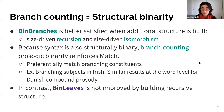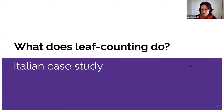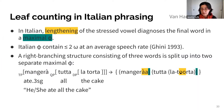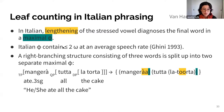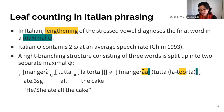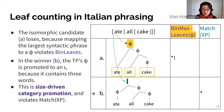In contrast, leaf counting binarity is not improved by building recursive structure. Let's see a case study from Italian, based on work by Nick Van Handel. In Italian, lengthening of the stressed vowel diagnoses the final word in a maximal phi — a phi not contained in any other phi. Italian phis typically contain up to two prosodic words at average speech rate. A right-branching structure of three words is split into two separate maximal phis in the prosody, as in 'ate all the cake' (mangera tuta la torta), phrased as two maximal phis with lengthening on both mangera and torta.